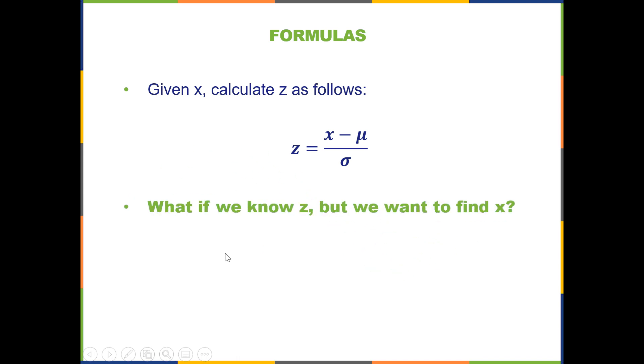What if we know z, but we want to find x? Use the inverted version of the z-score formula. In other words, the z-score formula solved for x. Do you remember how to solve for x?